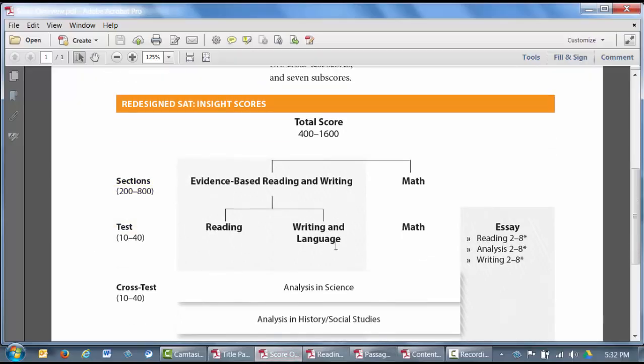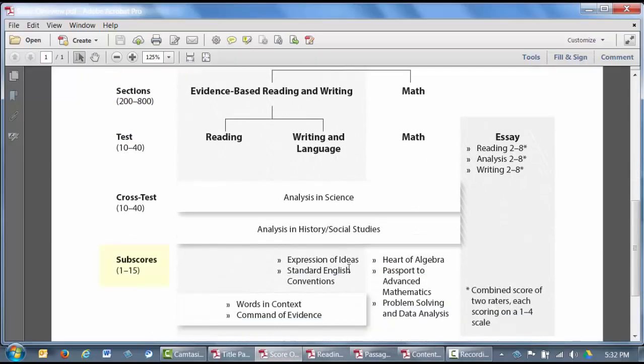When you get your SAT scores, you'll also see some sub-scores. Along with some of the questions on the writing and language test, some questions on the reading test will ask you to interpret the meanings of words based on the context of the passages in which they appear. These questions contribute to your words in context sub-score.